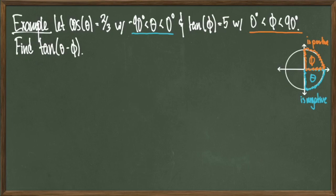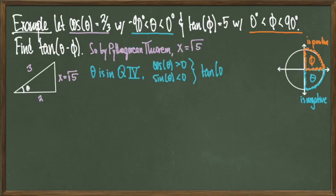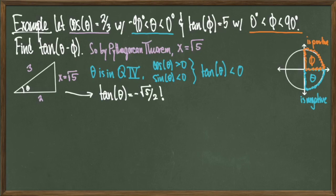Looking at cosine of theta equaling 2 over 3, we draw the corresponding triangle. The adjacent side to theta is 2 and the hypotenuse is 3, so the missing side is √5 by the Pythagorean theorem. Since theta is a negative angle in the fourth quadrant, cosine is positive and sine is negative, which means tangent is also negative. Therefore tangent of theta equals negative √5 over 2. To recap: cosine of theta gave us the triangle, the Pythagorean theorem gave the missing side, and the restrictions on theta told us the quadrant, which determined the sign of tangent of theta.